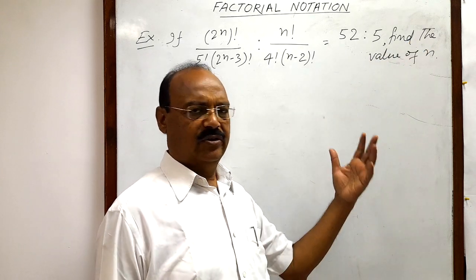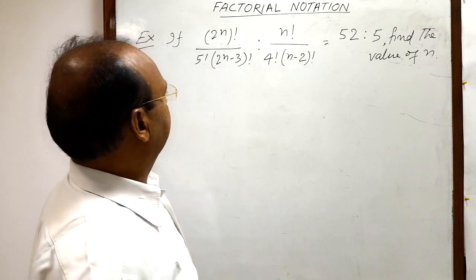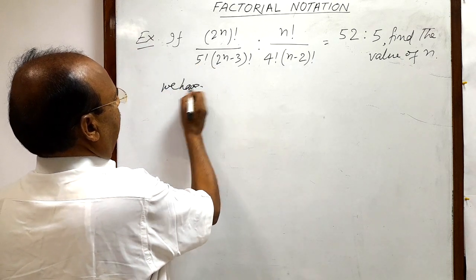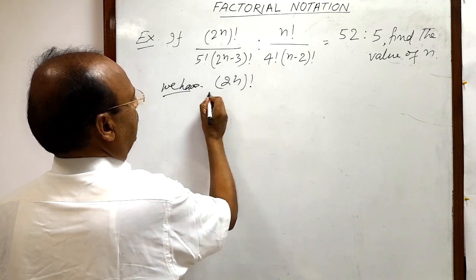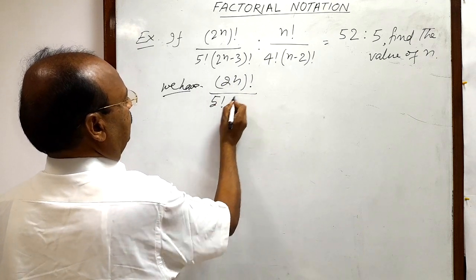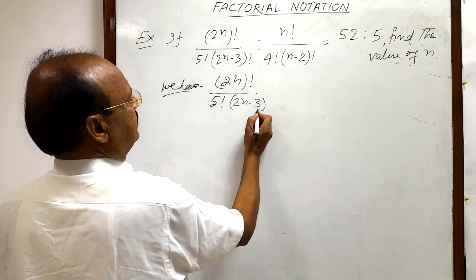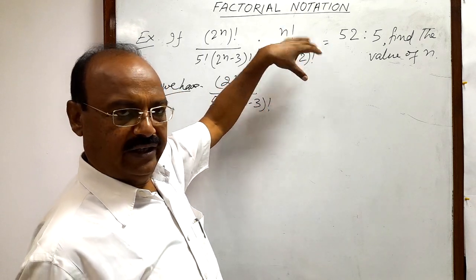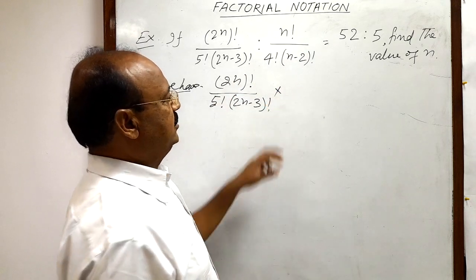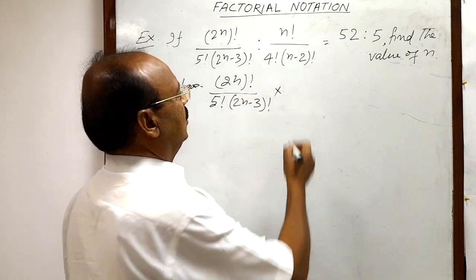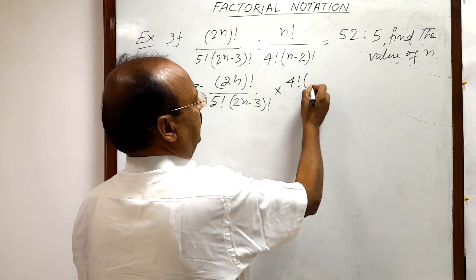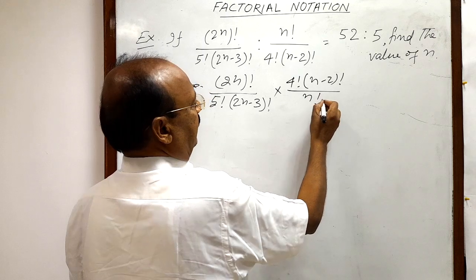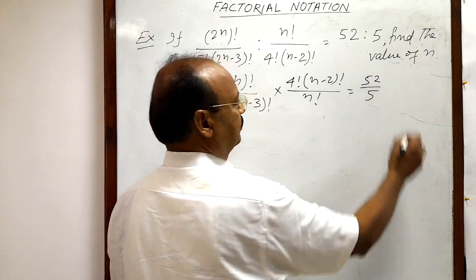Let us see the solution — it is very simple. We have (2n)! divided by 5! times (2n-3)!. When we convert the ratio into multiplication form, the denominator will come to the numerator. So we write 4! times (n-2)! divided by n!, and this is equal to 52 by 5.